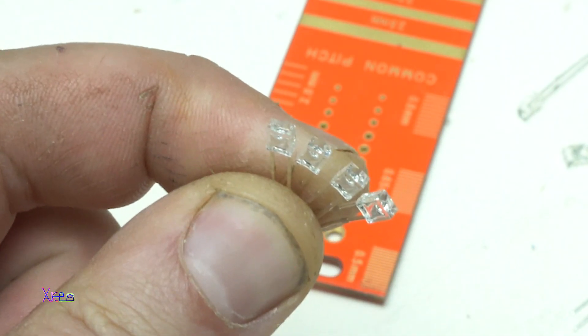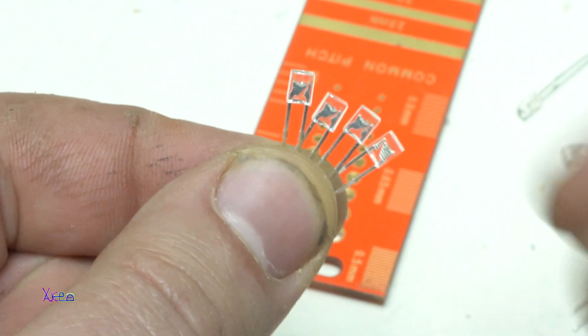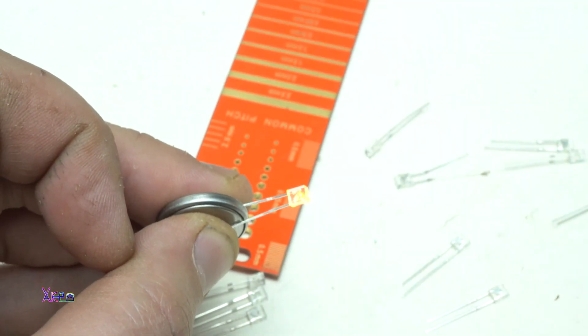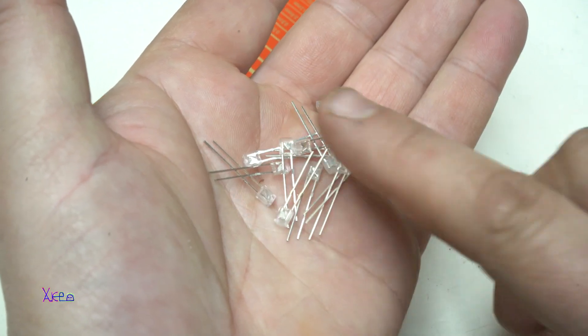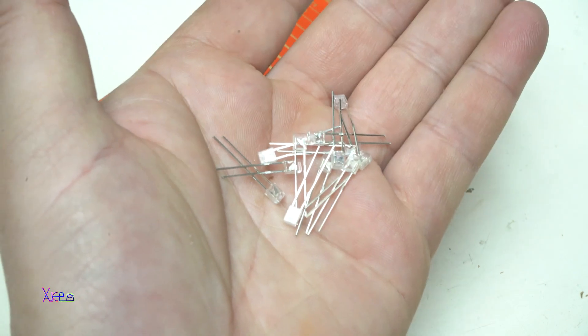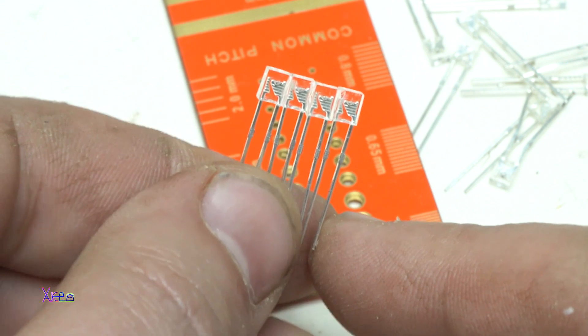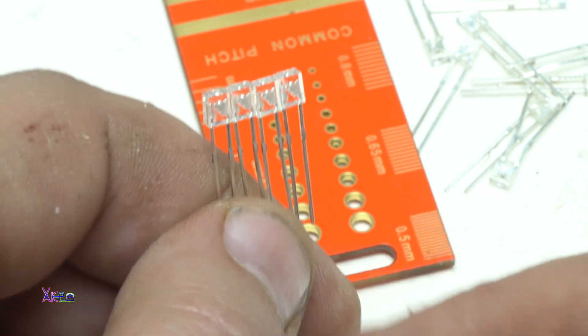We're gonna start this project with 12 LEDs with yellow light. These LEDs are working on 3 volts, but we're gonna use a resistor so we don't blow them up. And we're gonna solder them in the shape of Y, letter Y.